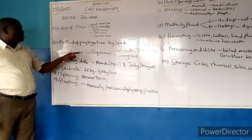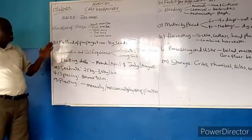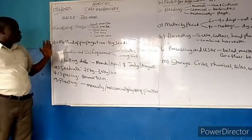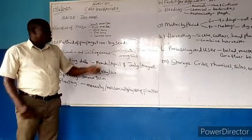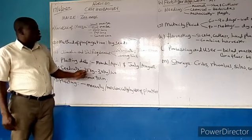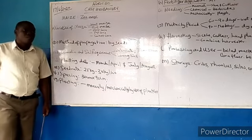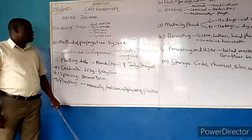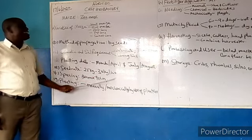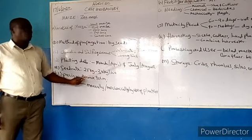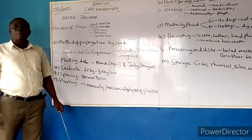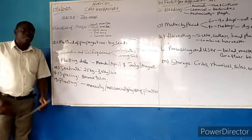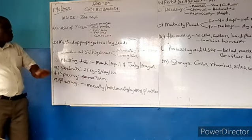Let's look at the climatic and soil environment. The ideal climatic condition to grow maize is a temperature of about 26 degrees Celsius and an average rainfall of between 75 cm to 150 cm. Maize grows very well in loam soil rich in organic matter.